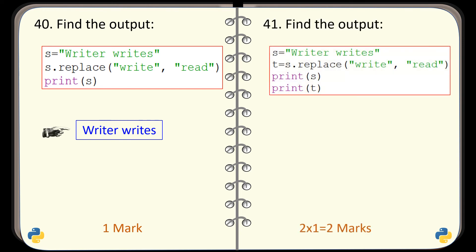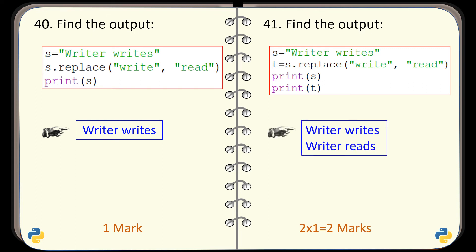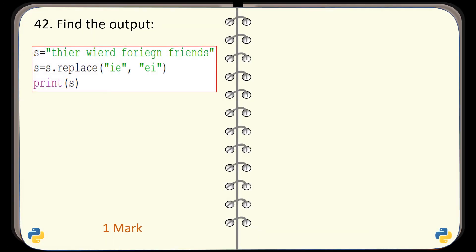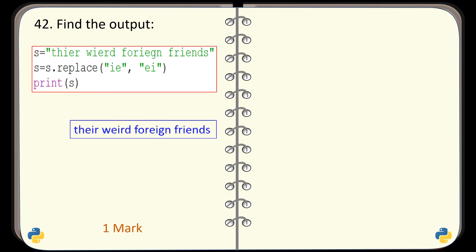Question number 41. Again, find the output generated by this code. And here is the correct output. Question number 42. Find the output of this code. And the answer is this one.